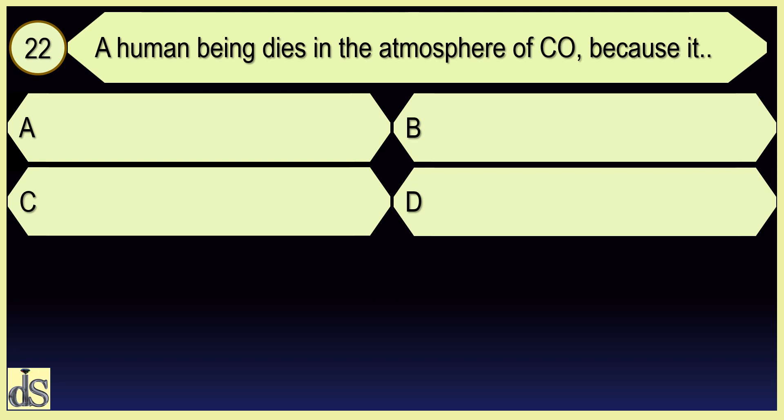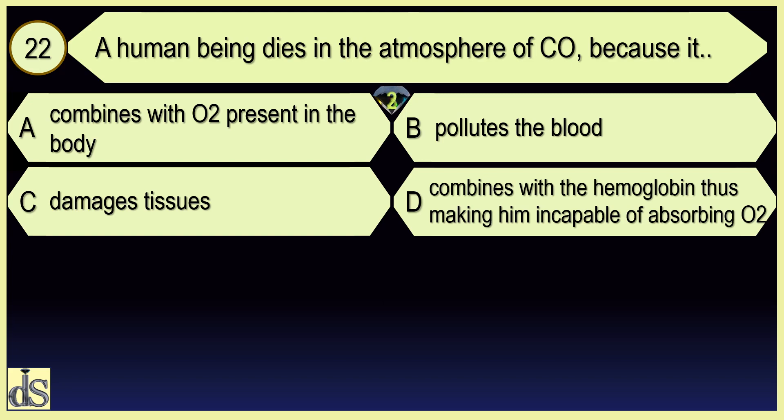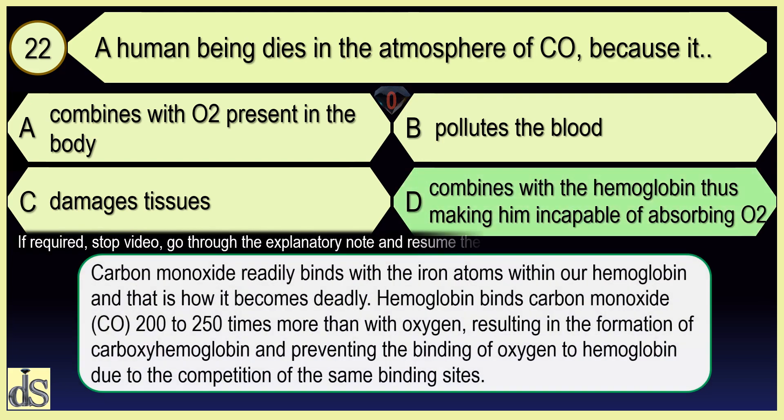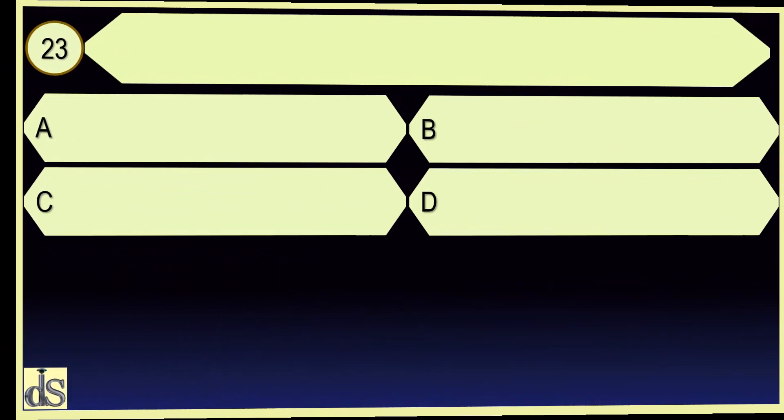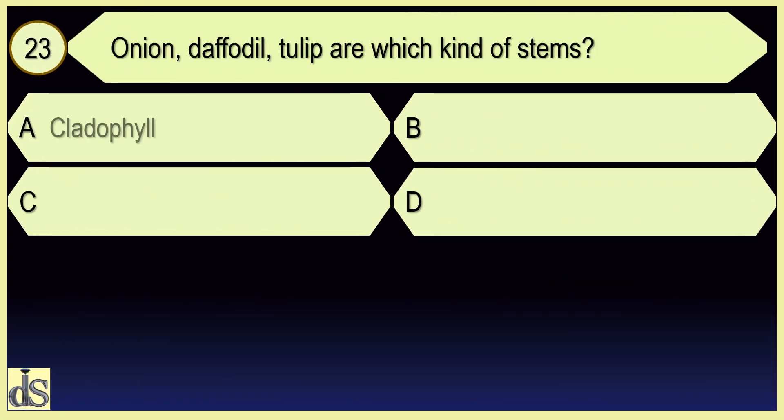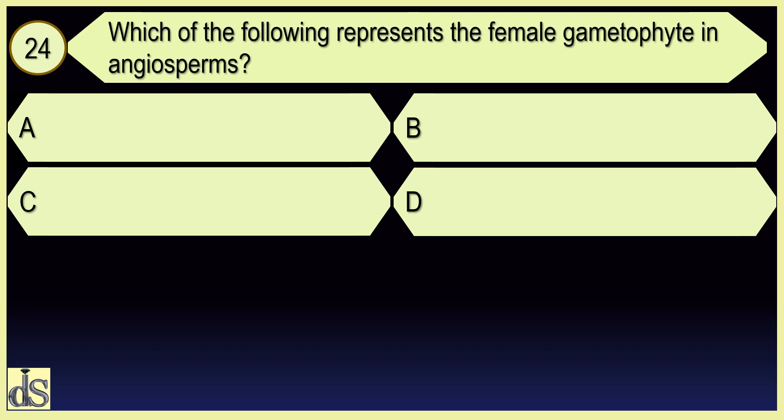A human being dies in the atmosphere of carbon monoxide because it combines with the hemoglobin thus making him incapable of absorbing oxygen. Onion, daffodil, tulip are which kind of stems? Bulb.